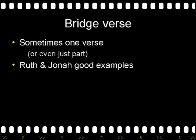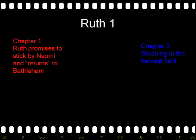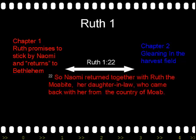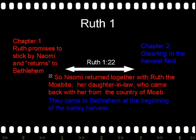In Ruth chapter 1, which has all been about the move from Moab back to Bethlehem and Ruth's commitment to Naomi her mother-in-law, verse 22 begins with a summary of chapter 1: 'So Naomi returned together with Ruth the Moabite, her daughter-in-law, who came back with her from the country of Moab.' The second half of the verse provides a bridge into chapter 2: 'they came to Bethlehem at the beginning of the barley harvest.' Although it's clearly part of the same verse, this is looking forward to the harvest scene in chapter 2.